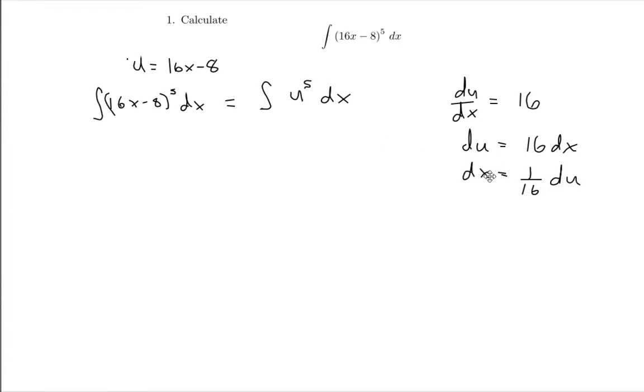So now in my integration, wherever I see a dx, I'm going to replace it by 1 over 16 du. This becomes u to the power of 5, and then my dx becomes 1 over 16 du. Now I have a constant multiplying my function u, so I can take the constant outside. That becomes 1 over 16 times the integral of u to the power of 5 du.